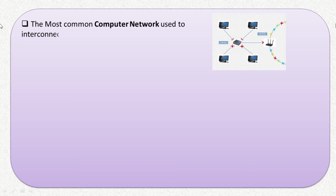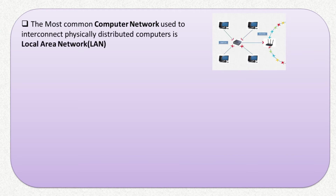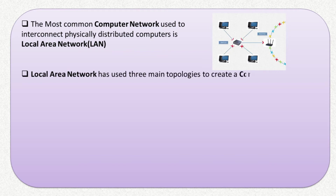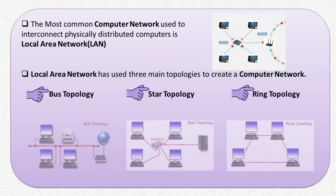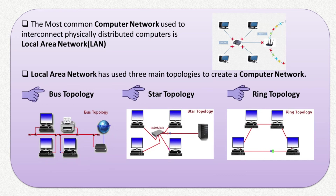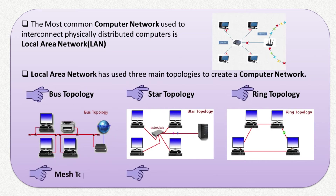The most common computer network used to interconnect physically distributed computers is the Local Area Network. A local area network has three main topologies to create a computer network: bus topology, star topology, and ring topology. Other topologies include mesh topology and hybrid topology.